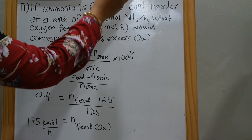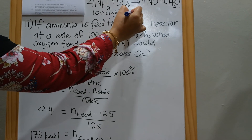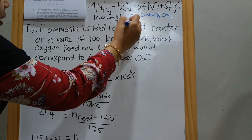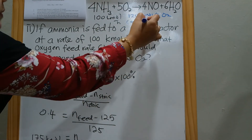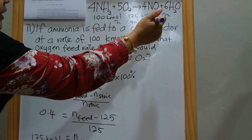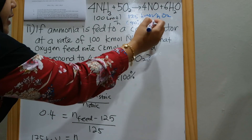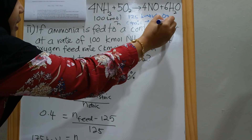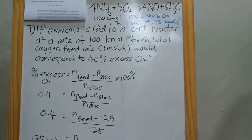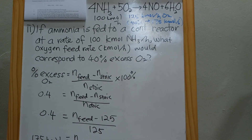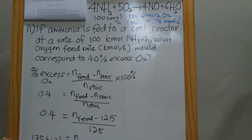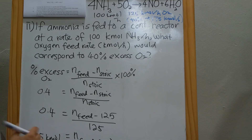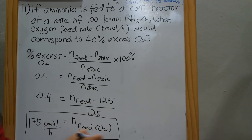In summary, if 100 kmol of ammonia reacts stoichiometrically it only requires 125 kmol per hour of O2. However, with 40 percent excess, the actual O2 feed that mixes with 100 kmol per hour of ammonia is 175 kmol per hour. That is the answer to this question.